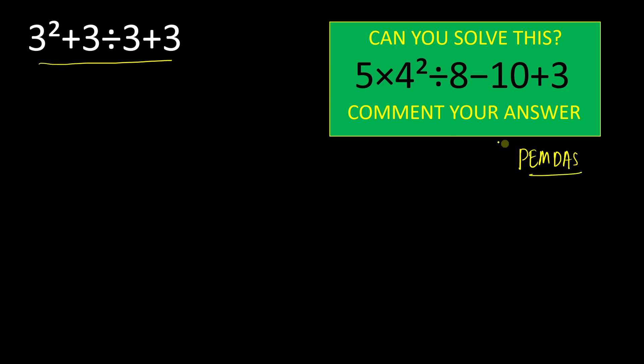Okay, so according to that, first priority will be given to this exponent which is 3². 3² is 3 times 3, which equals 9. So we will simply write 9 + 3 ÷ 3 + 3.